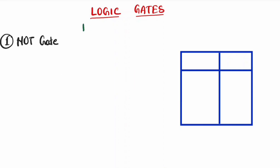We'll start with basic gates. There are three types of basic gates: NOT, AND, and OR. First, let's talk about the NOT gate. The NOT gate is a logic gate that takes one input and produces one output. This is the symbol of the NOT gate, which has one input.